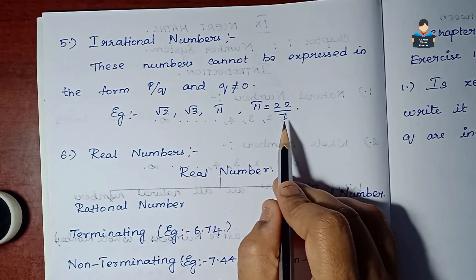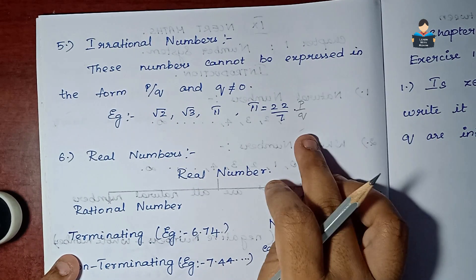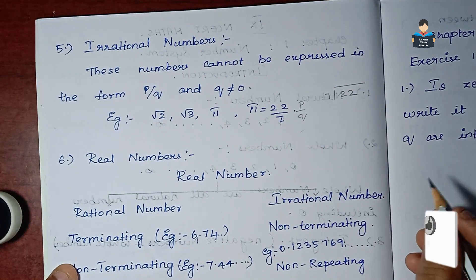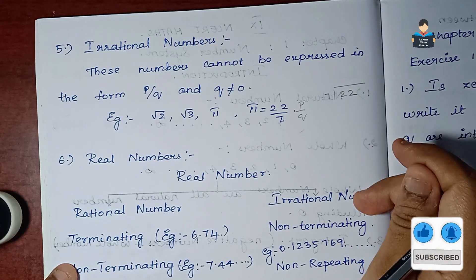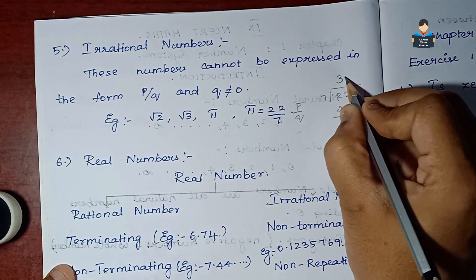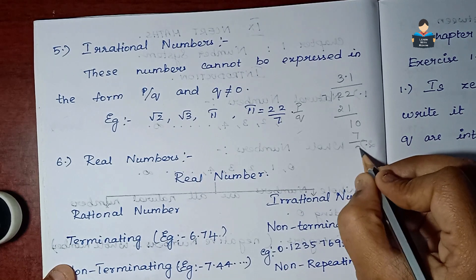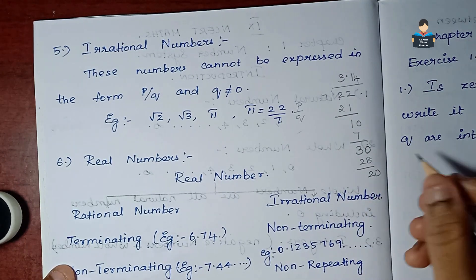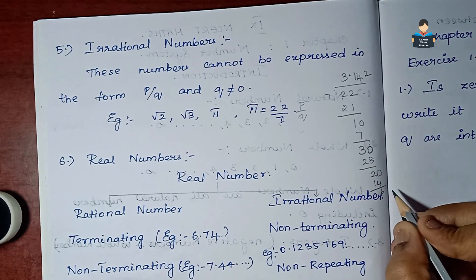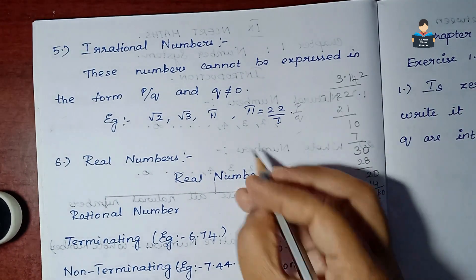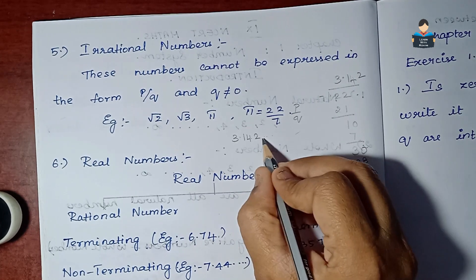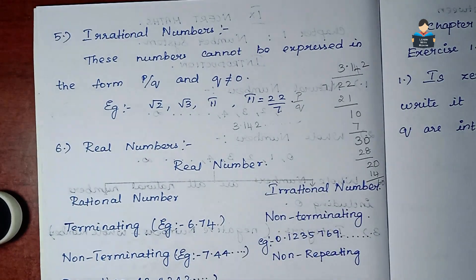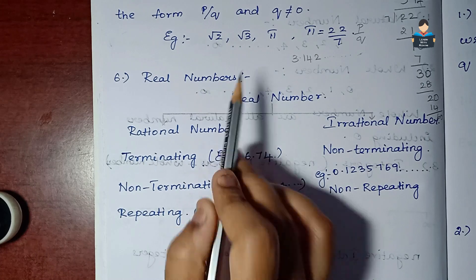You might ask why pi is irrational if 22 by 7 is its approximation in p by q form. When we divide 22 by 7, we get 3.142... which is non-terminating and non-repeating. Since this is a non-terminating and non-repeating decimal, pi is an irrational number.